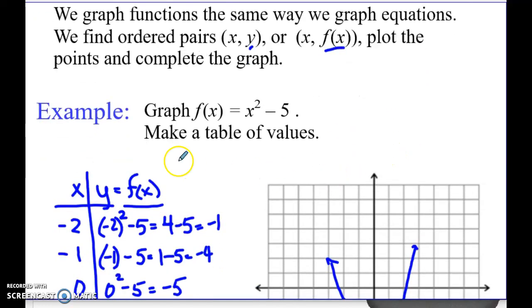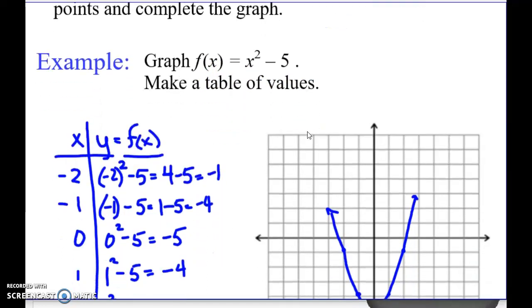So here's an example. Instead of being y equals x squared minus 5, it says f of x is equal to x squared minus 5. We want to start by making a table of values.